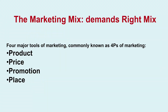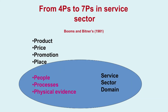The marketing mix: McCarthy talked about four Ps of marketing — product, price, promotion, and place. Booms and Bitner in 1981 came out with three more Ps, so there is a transition from four Ps to seven Ps. All seven Ps are very much relevant in the library sector, and they sit within the service sector domain.